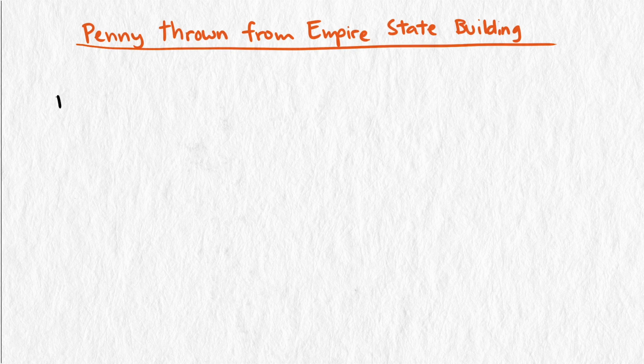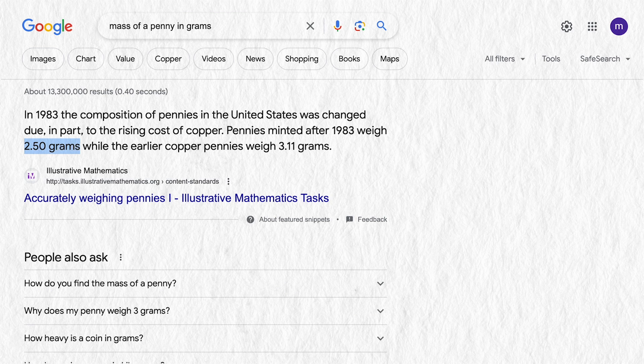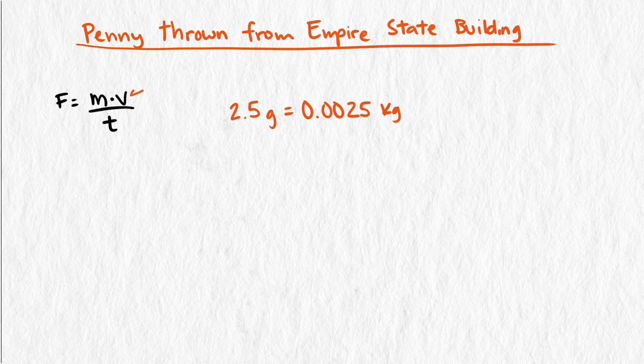So how much impact force is generated by throwing a penny off the Empire State Building? We need to know three quantities: mass, velocity, and contact time. We can find the mass easily using Google, it says about 0.0025 kilograms. Velocity is a little trickier, so let's come back to that. Contact time we'll estimate to be the same as our baseball situation, 0.001 seconds.